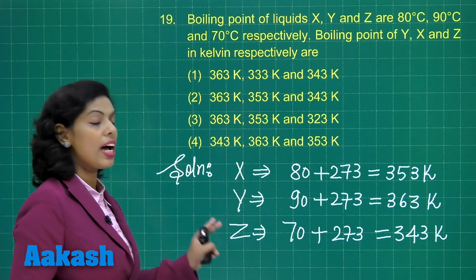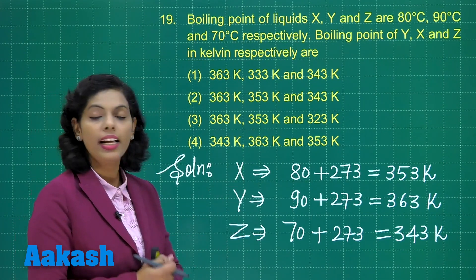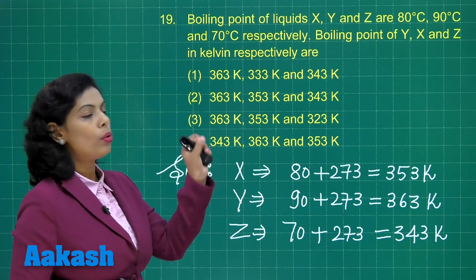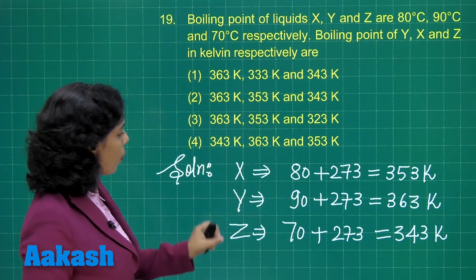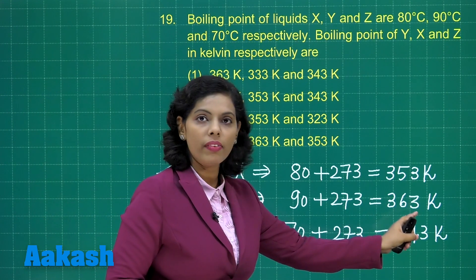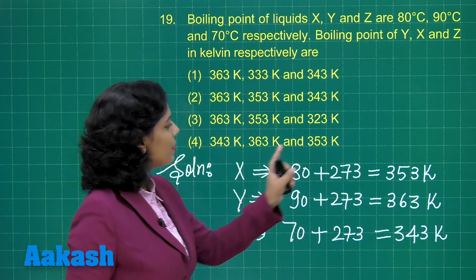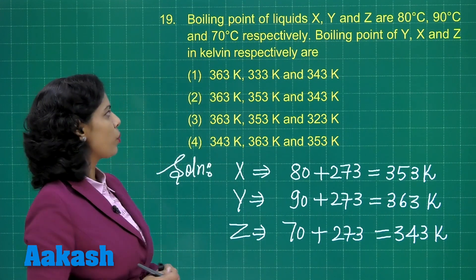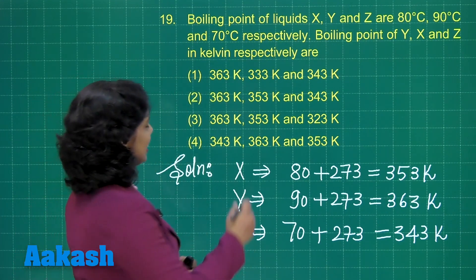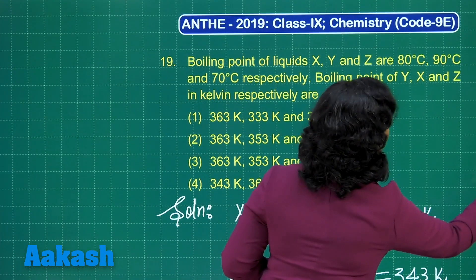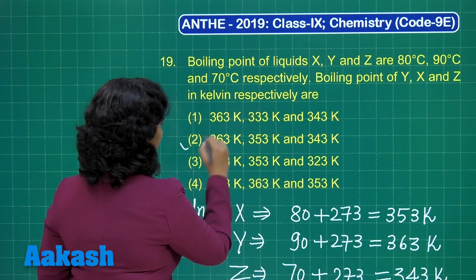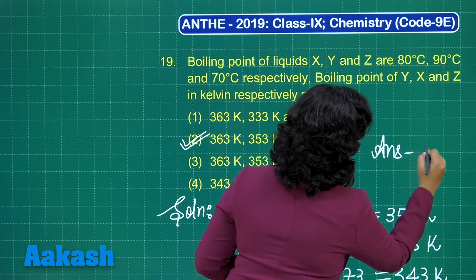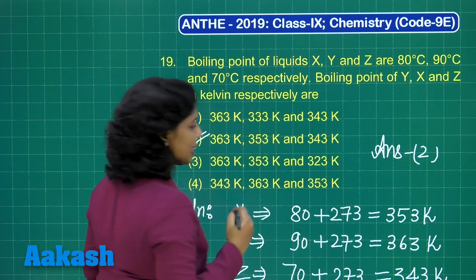For all X, Y and Z we have calculated. We need to write the order Y, X, Z. Y is 363 Kelvin, X is 353 Kelvin and Z is 343 Kelvin. This is correctly given in option 2, which is the correct answer. I hope it is clear.